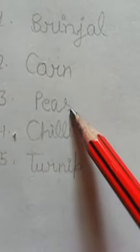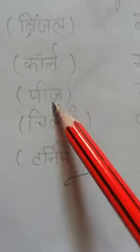Number three, P-E-A-S, peas. Peas means matar. Number four, C-H-I-L-L-I.